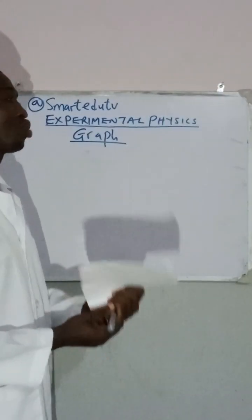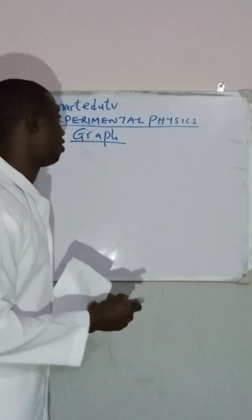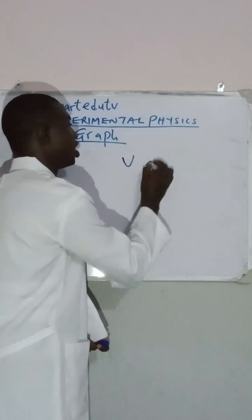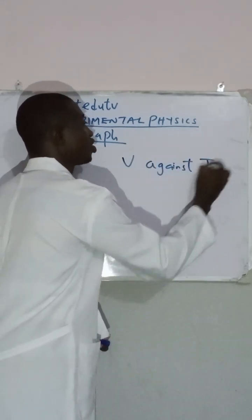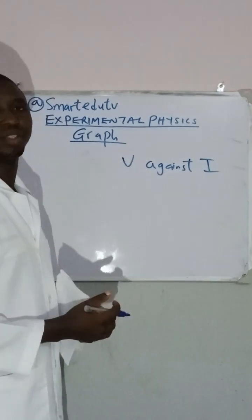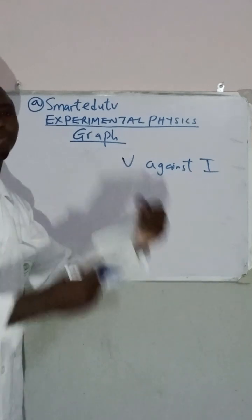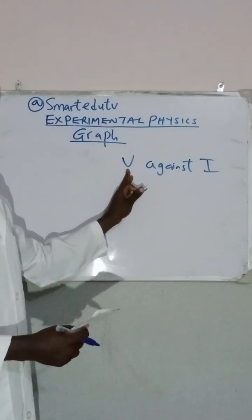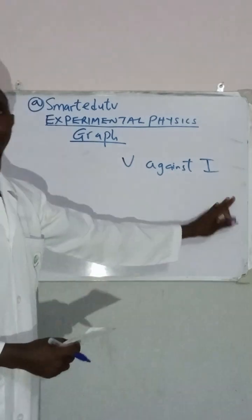For instance, you are asked to plot a graph of something against something — for example, a graph of voltage against current. How do we start? Plotting a graph of voltage against current simply means that on your vertical axis, we are plotting voltage, while on the horizontal axis, we are plotting current.